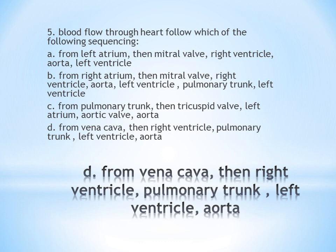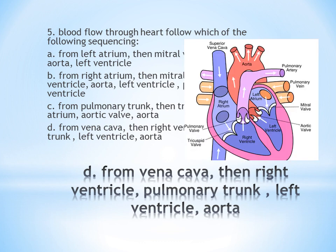The correct blood flow sequence: superior vena cava, right atrium, right ventricle, pulmonary artery, pulmonary vein, left atrium, left ventricle, finally aorta. Answer is D.